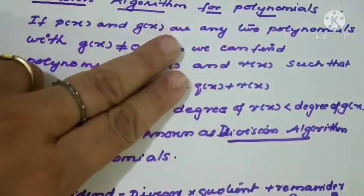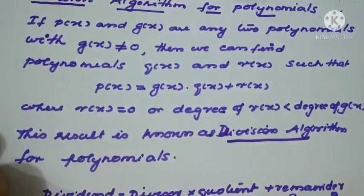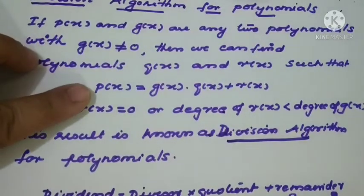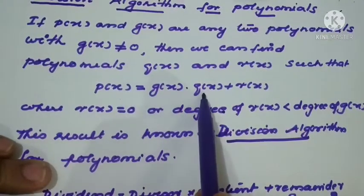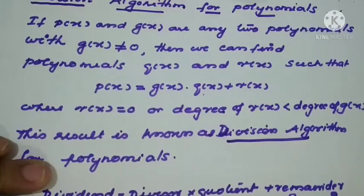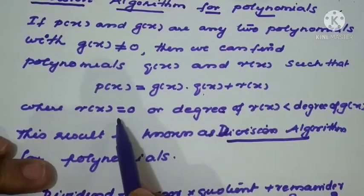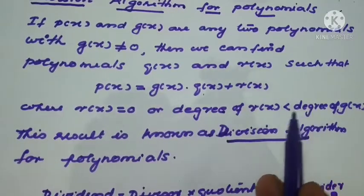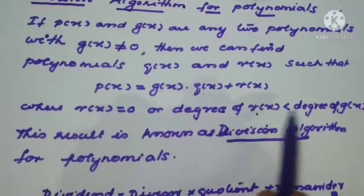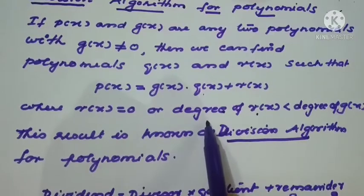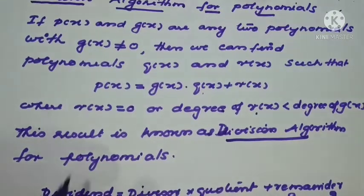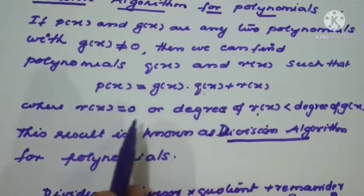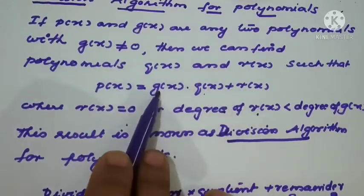Let us go through the definition once again. p of x and g of x are any two polynomials with g of x not equal to zero, meaning the divisor is not zero. The result is: p of x equals g of x into q of x plus r of x — that is, dividend equals divisor into quotient plus remainder — where r of x equals zero, or the degree of r of x is less than the degree of g of x. This result is known as the division algorithm for polynomials.